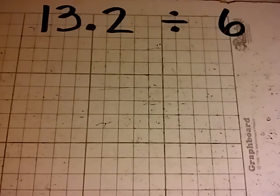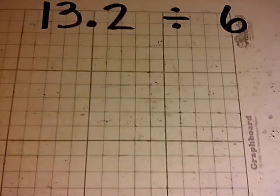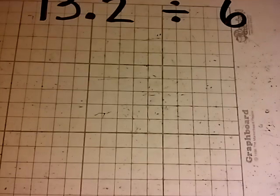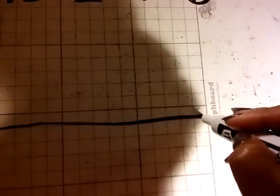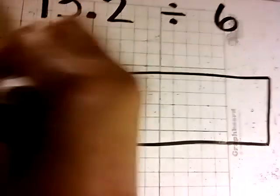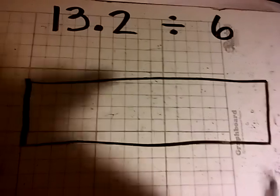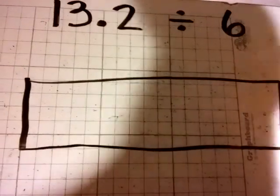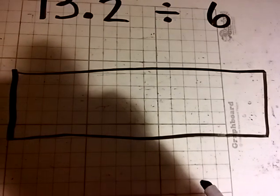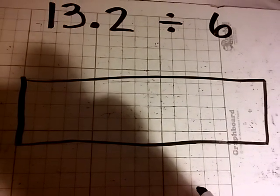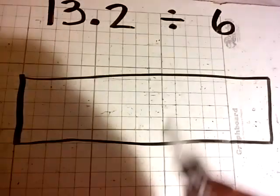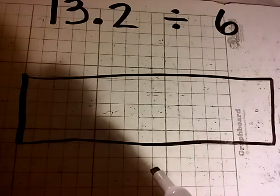Now we will divide 13 and 2 tenths by 6 using the rectangular model. Because we are using a rectangular model, we can let the 6, the divisor, be the width.